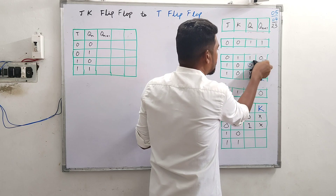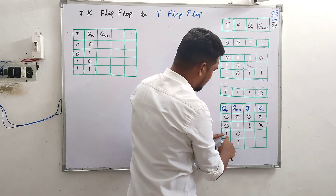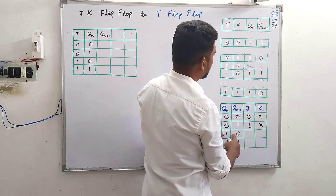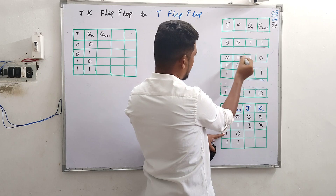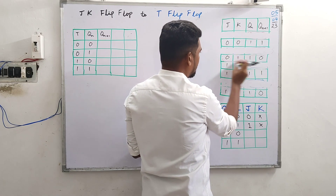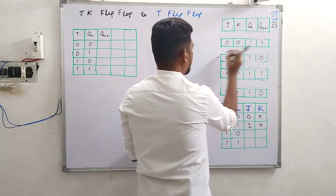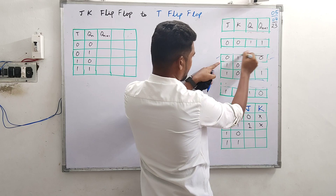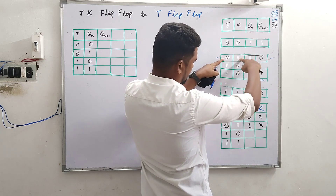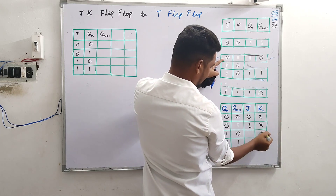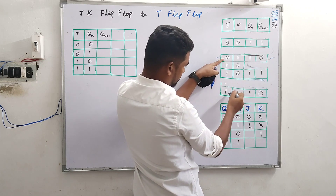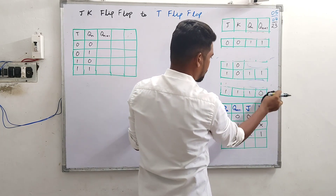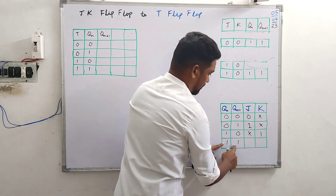For the one-zero combination: present state is one and next state should go to zero after the clock pulse. Looking at this combination — in the first case K=1 with J=0, and in the second case K=1 with J=one or zero. So K is straightaway one, and J may be zero or one — that's a don't care. So one-zero combination gives J=don't care, K=1.